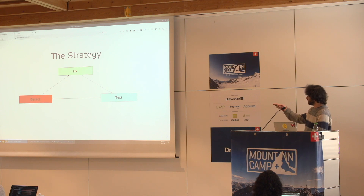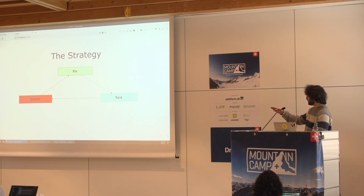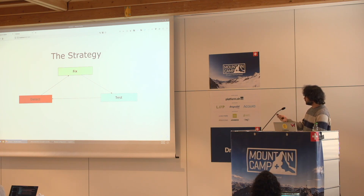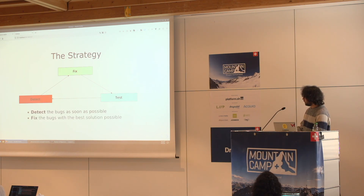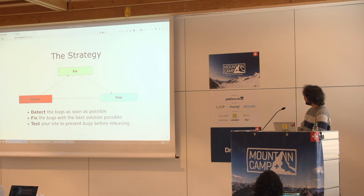For example, you may have fixed a bug but you must add a test for it. If the test breaks, it means the bug has appeared again. So the strategy is: detect the bugs, fix them, and test them — a continuous cycle.